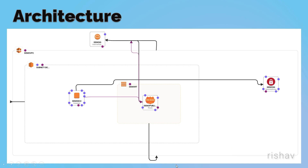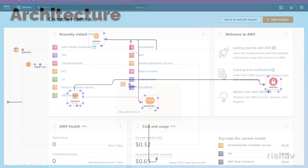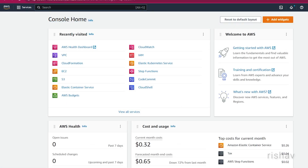Let's go to the AWS console and start executing this architecture. Inside the console, make sure you are in the region closest to you — for me it's Mumbai.